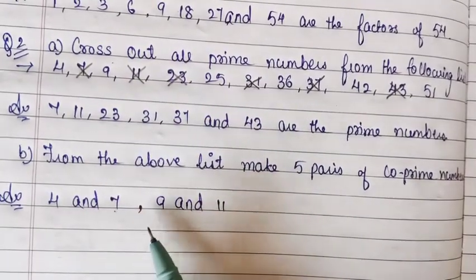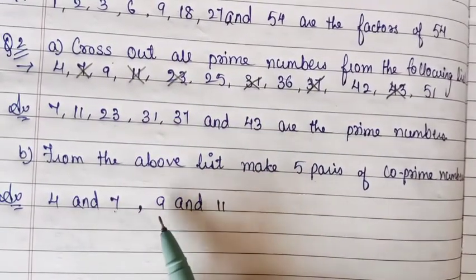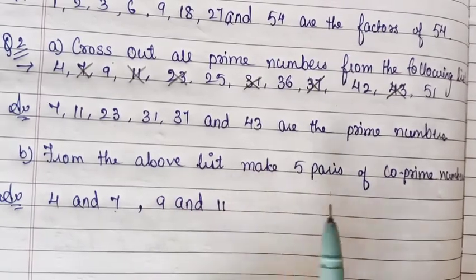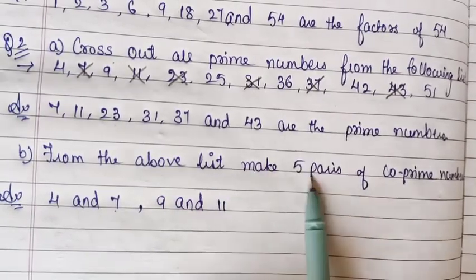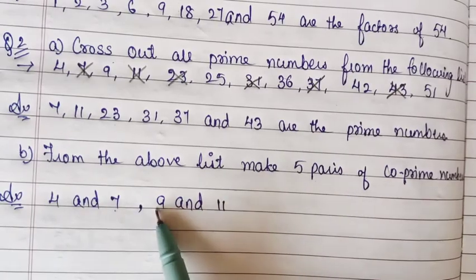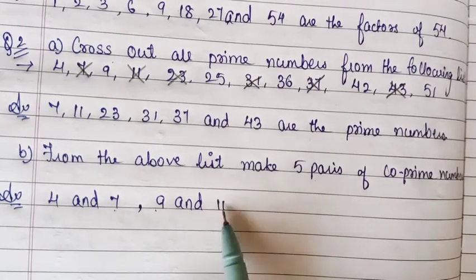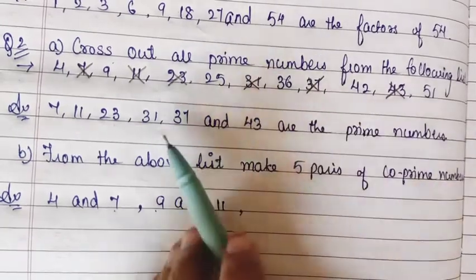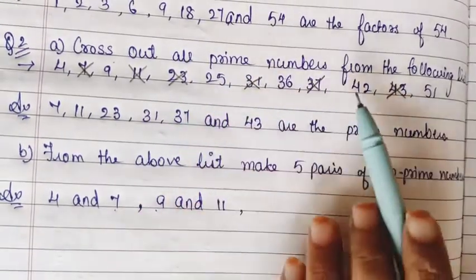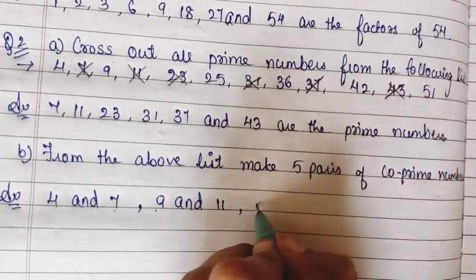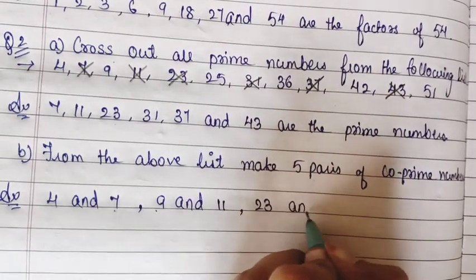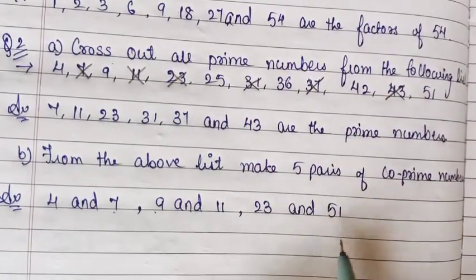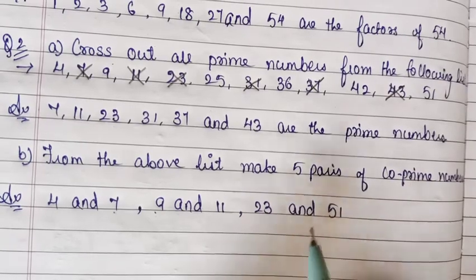9 comes in which table? The factors of 9 are: 1 × 9 = 9, and 3 × 3 = 9. And 11 comes in: 1 × 11 = 11, and 11 × 1 = 11. So only 1 is common between 9 and 11 — that is why they are co-prime numbers. The third pair we can make is 23 and 51, because in this also only 1 is a common factor.